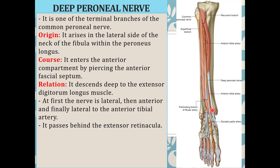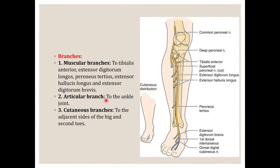At first the deep peroneal nerve is lateral to the anterior tibial artery. It then becomes anterior to the anterior tibial artery, and then again becomes lateral to it. It also passes behind the extensor retinaculum. These relations are very important.